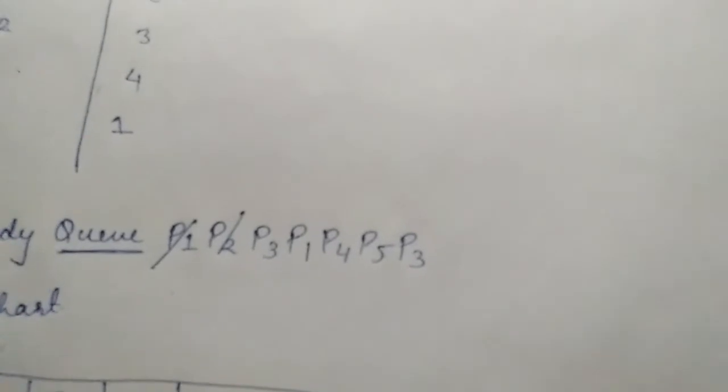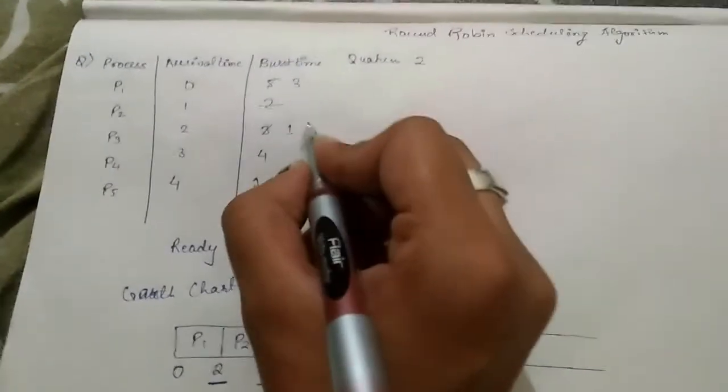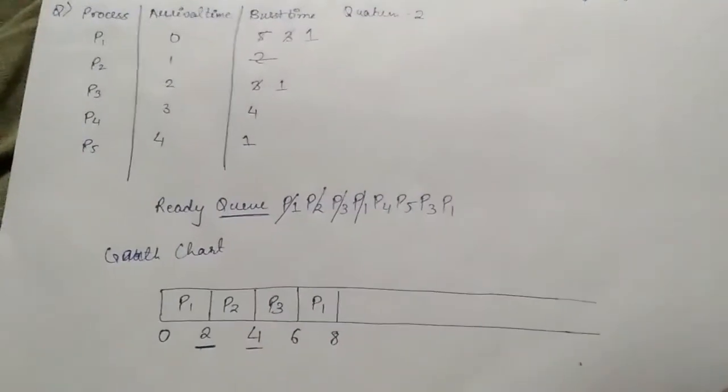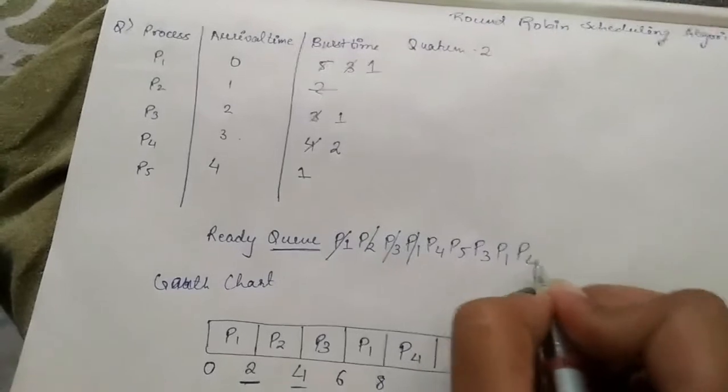Next is P3. P3 has arrival time two, so it executes from time four to six — two units — and is added back to the queue with one unit remaining. All processes P1 through P5 are already in the ready queue by this point. Now P1 is left with three units, so it executes two units from six to eight and is left with one unit, and is added back to the ready queue. Now P4 has four units left, so it executes two units and is added back.